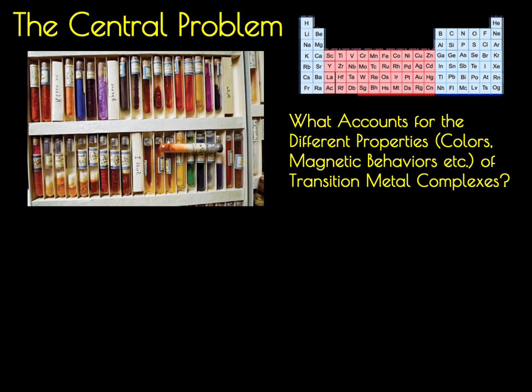Since their discovery, it has been known that molecules containing transition metal ions had different properties than molecules derived from main group elements. These compounds displayed a wide variety of different colors, magnetic behaviors, and reactivity patterns that differed dramatically from their main group counterparts.